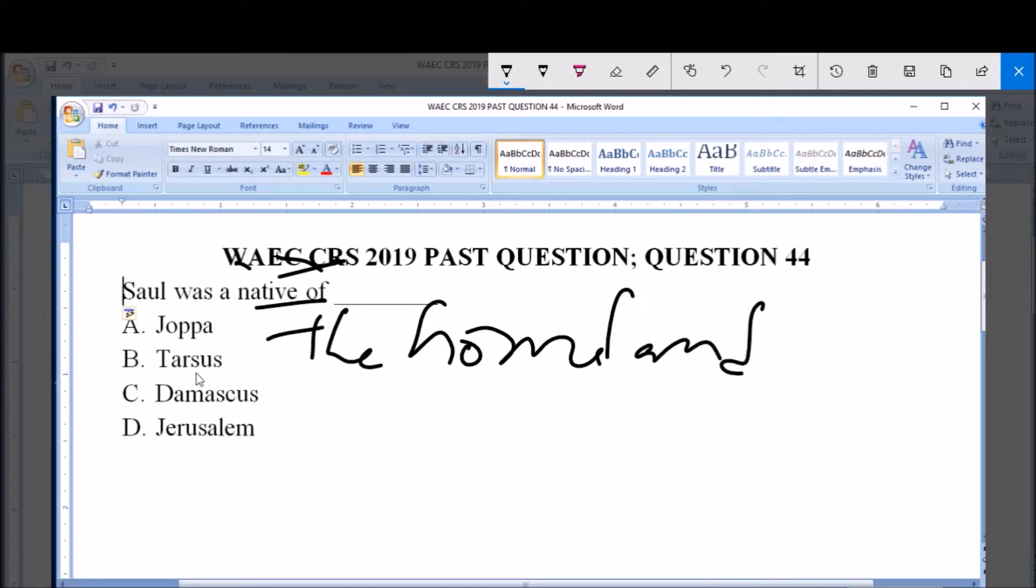A. Joppa, B. Tarsus, C. Damascus, D. Jerusalem. So in the New Testament, his native homeland is Tarsus, which is B. For the detail of this, we look at the book of Acts chapter 9, verse 1 to 31.